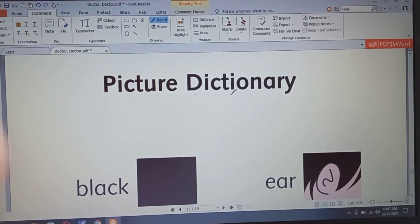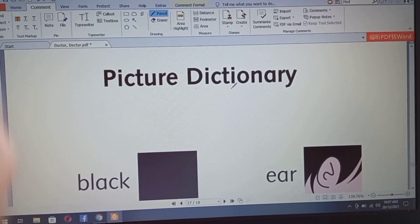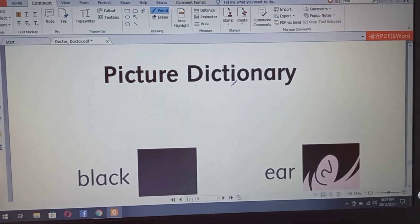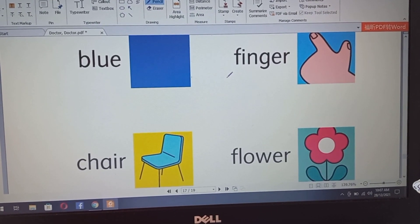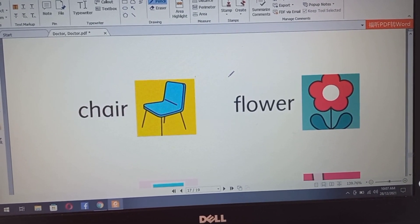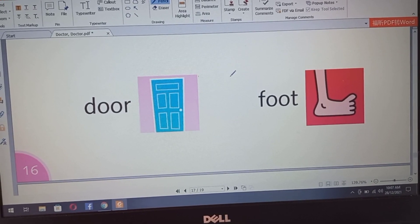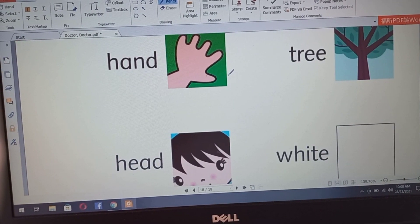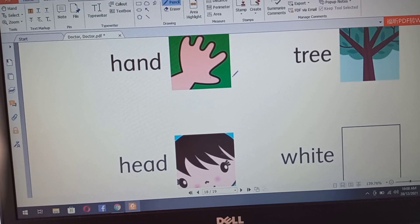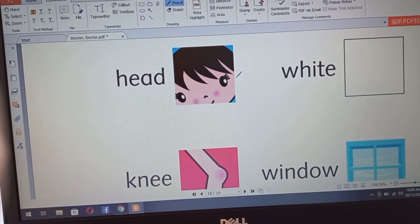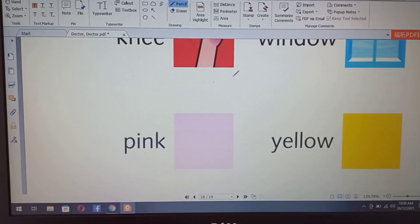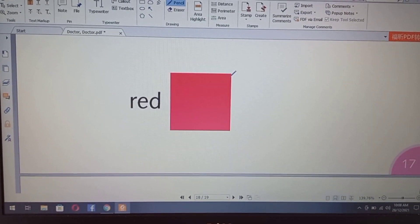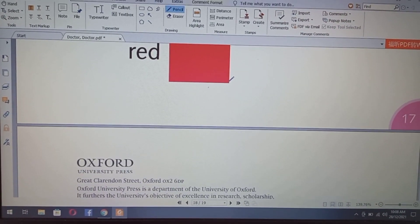Bitter, dictionary. Black, ear, blue finger. Chair, flower. Door, foot, hand. Tree, head. White, knee. Window. Pink, yellow. Red. Thank you, everyone. Goodbye. Goodbye. Bye.